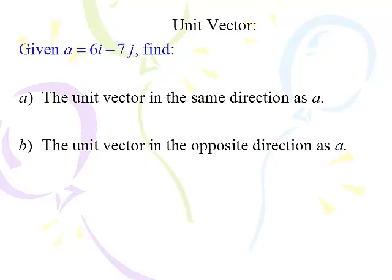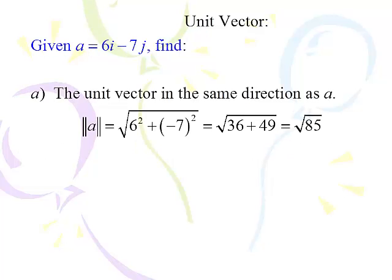We're given vector a as 6i minus 7j. We want to find a unit vector in the same direction and a unit vector in the opposite direction. The first thing you have to do is find the magnitude of a — the length of vector a. To find the magnitude, you square the x, square the y, add them up, and take the square root. That gives us square root of 85, and we'll leave it as square root of 85 — we are not going to use a decimal approximation.